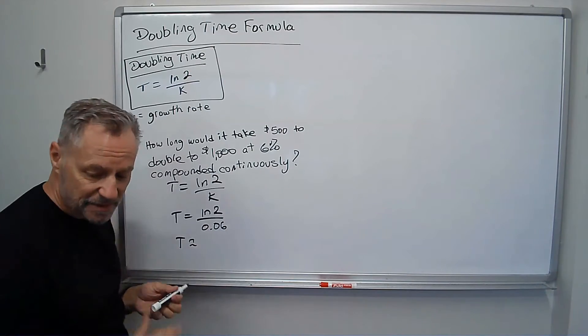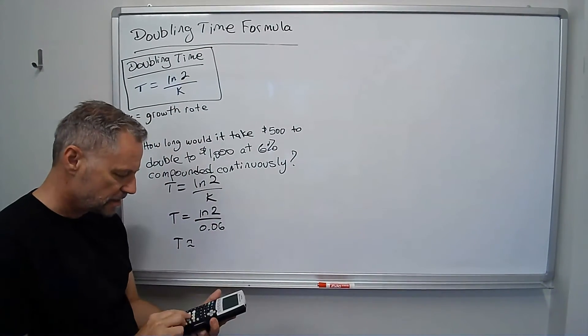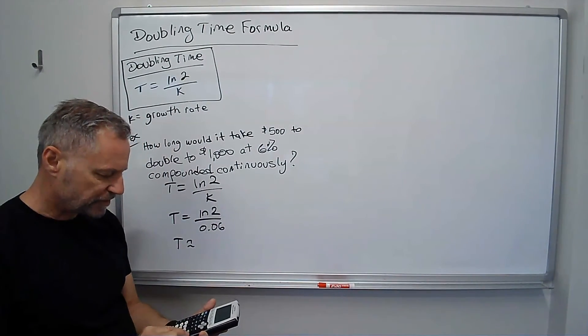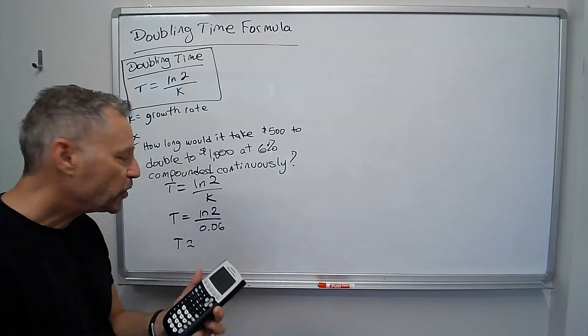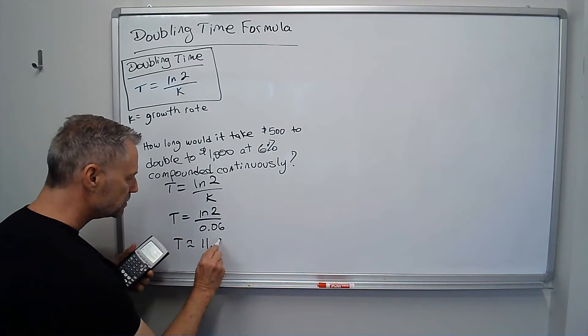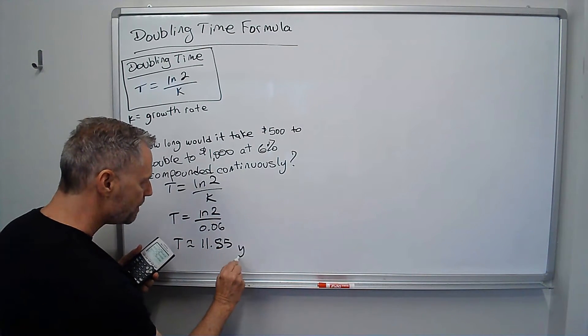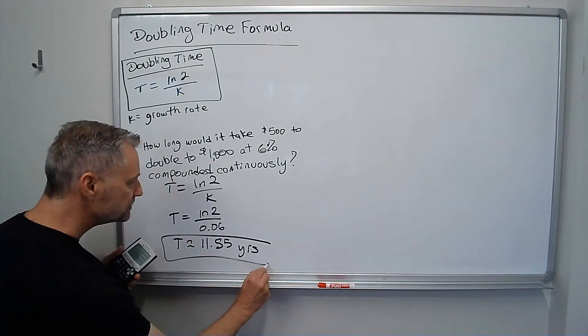And so t is approximately, we've got my calculator, ln of 2, close parentheses, divided by 0.06, about 11.55 years. And I'm done. Simple as that.